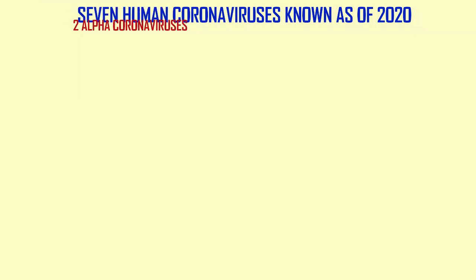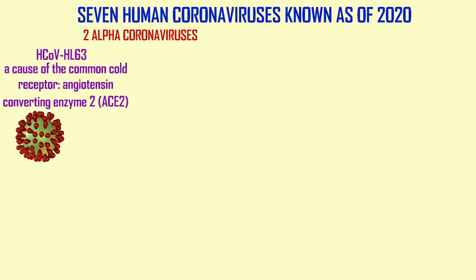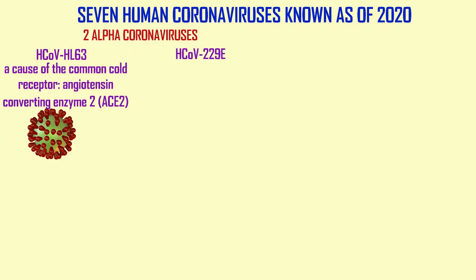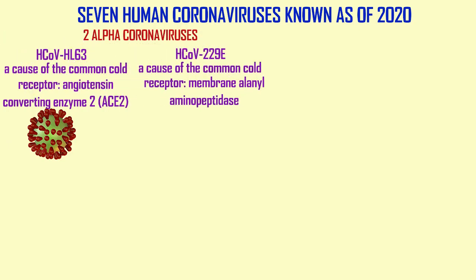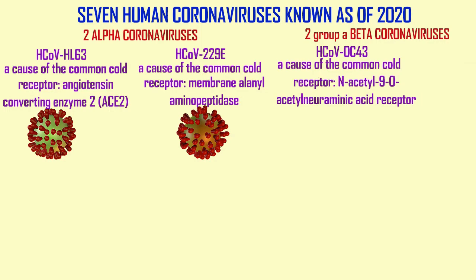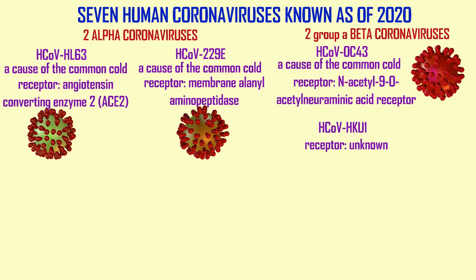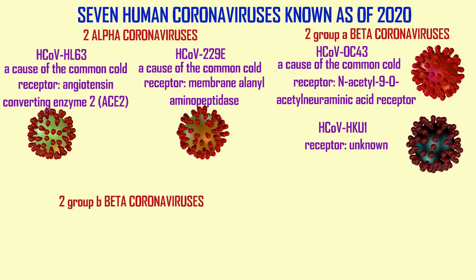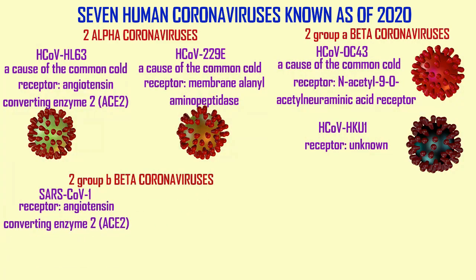Currently there are seven coronaviruses known to infect humans. Two are classified in group 1, the alpha coronaviruses, both of which are causes of the common cold. About 10 to 15% of common cold incidence is attributed to coronaviruses. One uses ACE2 as a receptor, but the other uses a different peptidase, membrane alanyl aminopeptidase. Of the two coronaviruses known as group A beta coronaviruses, one is a cause of the common cold and uses the N-acetyl-9-O-acetyl neuraminic acid receptor, and the other's receptor is currently not identified.